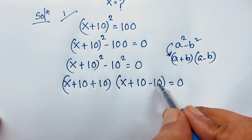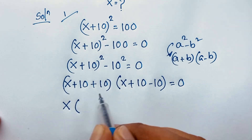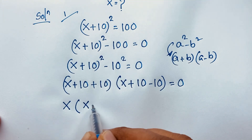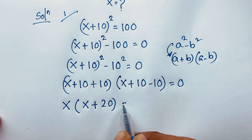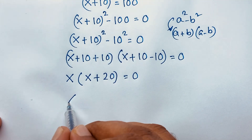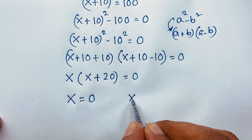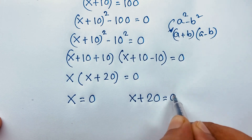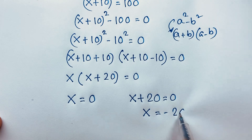Now these 10s simplify, so we find x(x + 10 + 10), which is x(x + 20) = 0. We find two cases: first case x = 0, and in the other case x + 20 = 0, which gives x = −20.